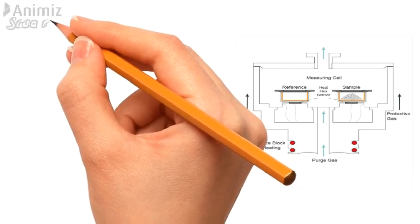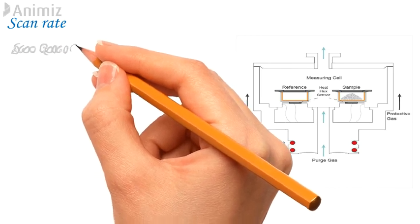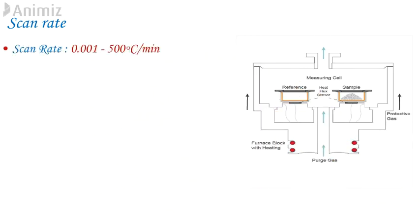11. Scan Rate. Traditionally, most common scan rate used by thermal analysts is 2 to 10 degrees Celsius per minute. But with commercially available instruments, rate can be varied between 0.001 and 500 degrees Celsius per minute, often with significant advantages. The choice of scan rate affects the following areas.